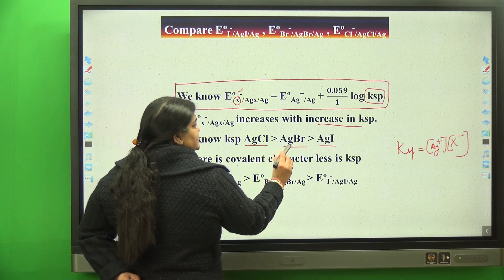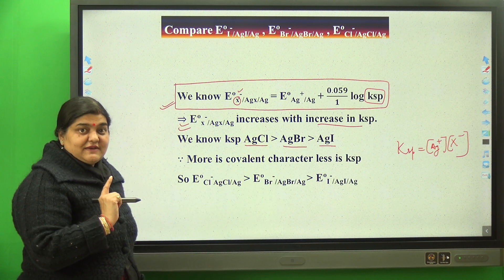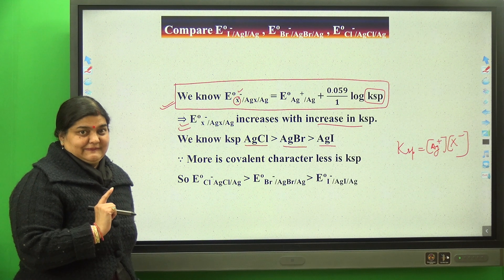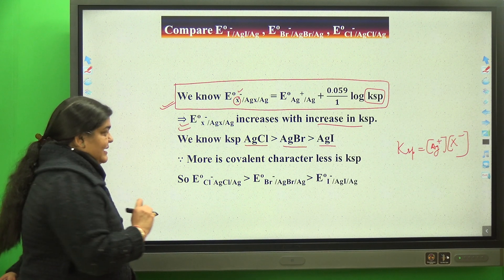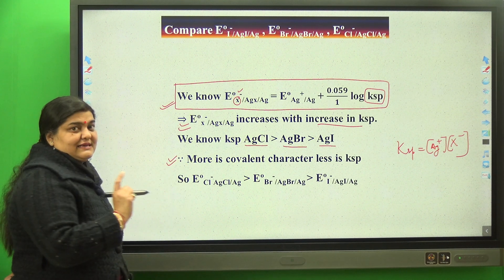What is different? It's the nature of the halide. We have just now done: more is the covalent character, less is KSP. We all do in chemical bonding in Fajan's rule.